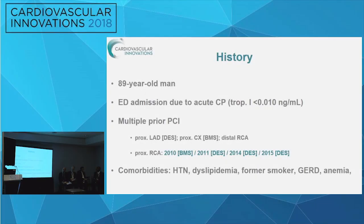Our patient was an 89-year-old man who was admitted to the emergency department due to acute chest pain. Myocardial infarction was excluded. The patient had undergone PCI multiple times in the proximal LAD and circ due to prior myocardial infarction, and also underwent multiple interventions in the proximal RCA due to multiple restenosis. The patient also had coronary risk factors.